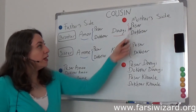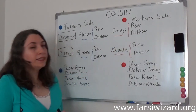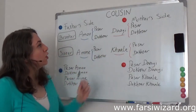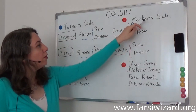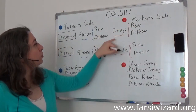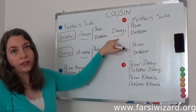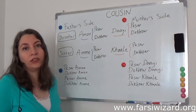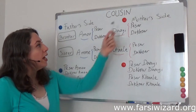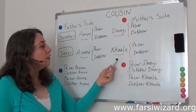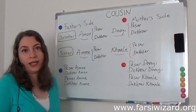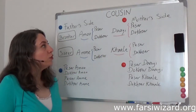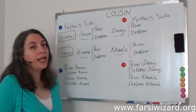Now on your mother's side, we have exactly the same thing, just different words. Your mother's brother will be 'da'i' — so 'da'i' is your maternal uncle. And your mother's sister will be 'khala,' which is your maternal aunt.